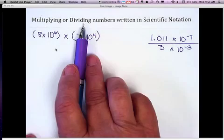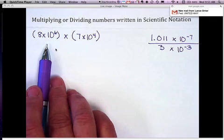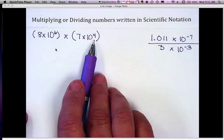This lesson is about multiplying and dividing numbers that are written in scientific notation. Our first example is multiplying two numbers that have been written in scientific notation.